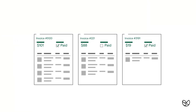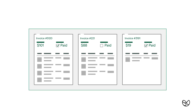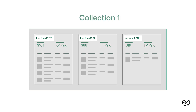First, we need to upload some files into a collection. A collection holds a group of similar files together. Files in the same collection should have similar layouts and all contain the same fields you're trying to extract. For example, in this group of files, we can extract invoice number, total amount due, and a checkbox indicating paid status. You can create as many collections as you need, and each one will be uniquely trained on the documents within them.